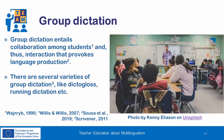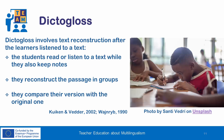Group dictation entails collaboration among students, and thus interaction that provokes language production. There are several varieties of group dictation. Here we will briefly present dictogloss, while in the second part of this unit we will focus on running dictation. Dictogloss is a form of text reconstruction. The learners read or listen to a text while they also take notes. Then they have to reconstruct the text in groups, and in the final stage they compare their version of the text with the original one. The text needs to include many instances of the target grammatical phenomenon, so that the learners are forced to use these forms, and thus negotiate them with their classmates during the reconstruction phase.